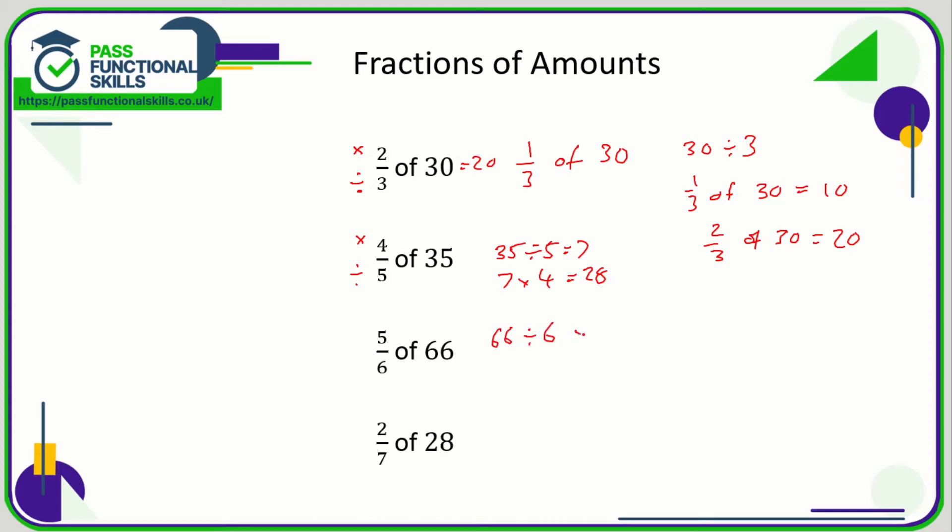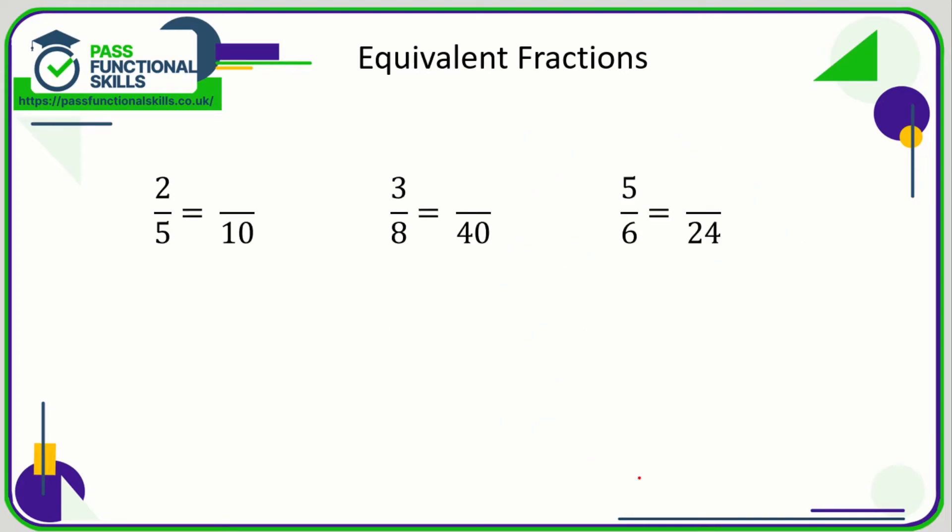So 5/6 of 66, that's going to be 66 divided by 6 multiplied by 5. 66 divided by 6 is 11, 11 times 5 is 55. 2/7 of 28 is 28 divided by 7 multiplied by 2. 28 divided by 7 is 4, 4 times 2 is 8. Easy.